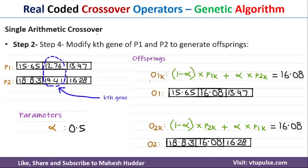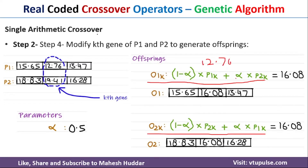This is done using the following equations. O1 is calculated as: (1 - alpha) × p1k + alpha × p2k. Here alpha is 0.5, p1k is 12.76, and p2k is 19.41. So (1 - 0.5) × 12.76 + 0.5 × 19.41 gives us o1 equal to 16.08.